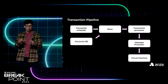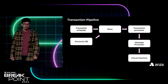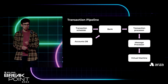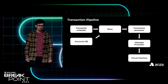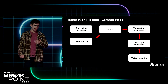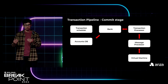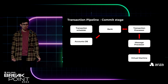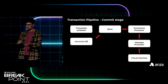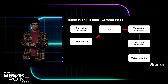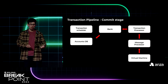We have a transaction scheduler that decides what transactions can be executed in a batch. Then the bank, one of the Agave components, loads all the accounts from the database. The transaction processor performs all the checks to make sure a transaction is valid. Then we have a message processor, which serializes all the accounts and passes the data to the virtual machine. After that, we have the commit stage: we backtrack all the results from the virtual machine to the account DB, serialize the accounts in the message processor, and the transaction processor verifies that none of the account constraints were violated — like balance, landlord, consumed, rent — and then commits all results to the database.